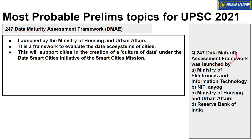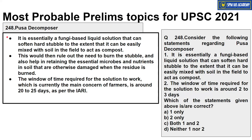Topic 248: PUSA Decomposer — a fungi-based liquid solution developed to address stubble burning. After crop harvesting, farmers burn the leftover stalks causing severe air pollution. PUSA Decomposer is a liquid solution containing fungi — when sprayed on stubble, it slowly converts the residue into compost that mixes with the soil, increasing soil fertility and preventing air pollution. The drawback is that it takes 20 to 25 days, meaning farmers must leave their fields idle for that period — which is a challenge associated with PUSA Decomposer.